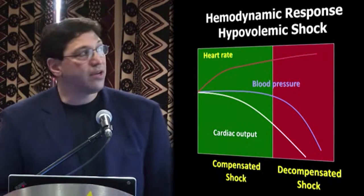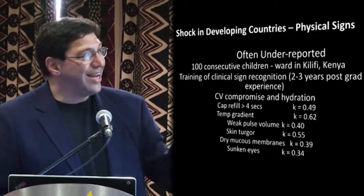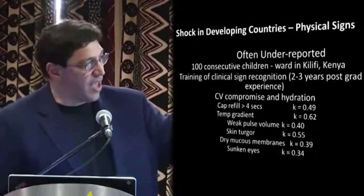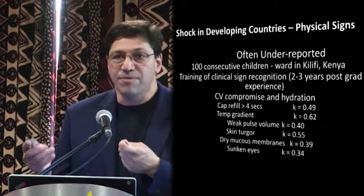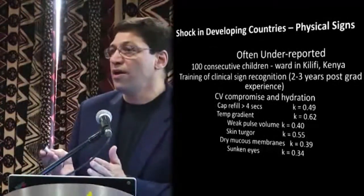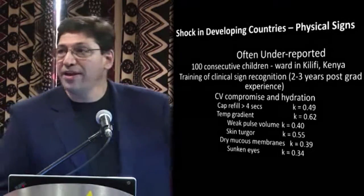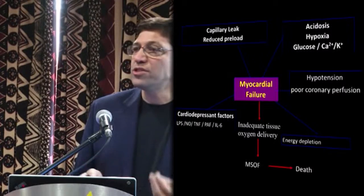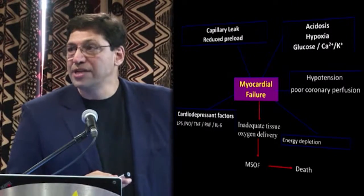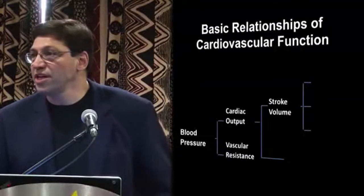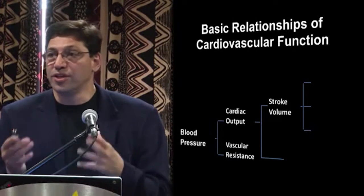Shock in developing countries is hard to find. A 2004 report took 100 consecutive children and tried to get inter-rater reliability for common signs of capillary refill, temperature gradient, and pulse volume. The kappa values were very low — our ability to assess and communicate simple measures of shock is quite limited. We have to perhaps use innovative tools to do a better job. Once found, the problem is not similar to adults who have vascular failure; frequently these problems for children manifest as myocardial failure as opposed to vascular failure, but the principles of resuscitation are the same from child to adult and from community to ER to ICU.